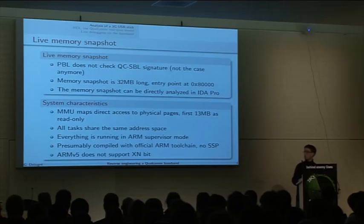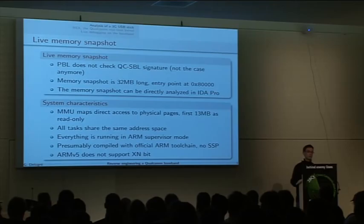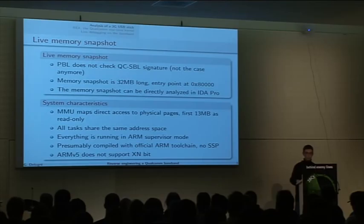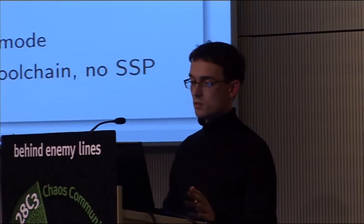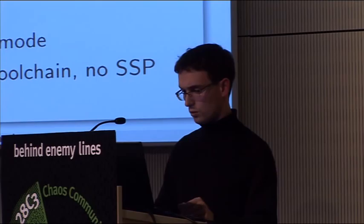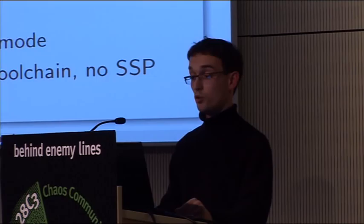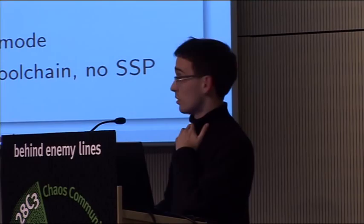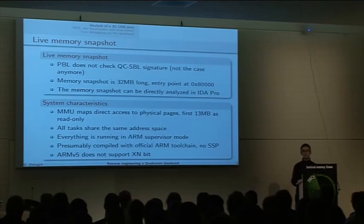The memory snapshot is 32 megabytes long. You can find the entry point by reversing the bootloader, and it can be directly passed into IDA Pro. From this point you can already see some system characteristics: all tasks share the same address space. You can quickly find where the page table is and see that the first 12 megabytes of memory are marked as read-only. Everything is running in ARM supervisor mode. It's presumably compiled with RealView, the official ARM toolchain. There is no stack protection. ARM V5 does not support XN bytes, which is equivalent to NX on x86.